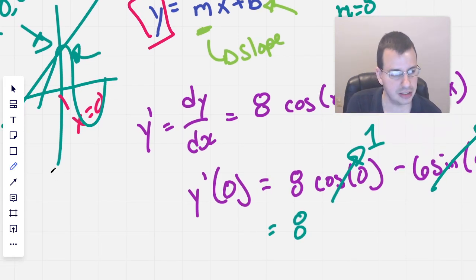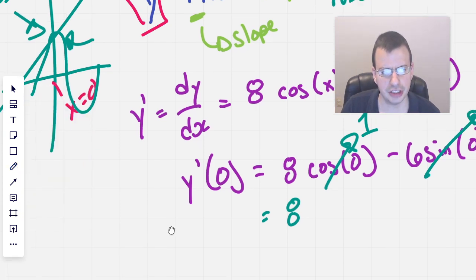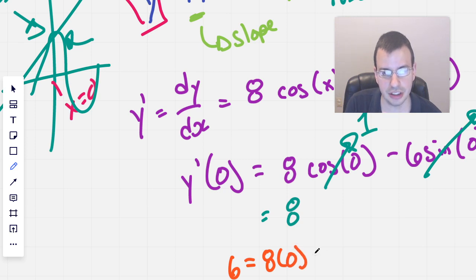Y, which we now know is, I know, so messy, so messy. I should be more organized. Y, which we now know is six, equals m, which is eight. And we're going to multiply that by x, which we know is zero, plus b. This part is just zero, so b will equal six.